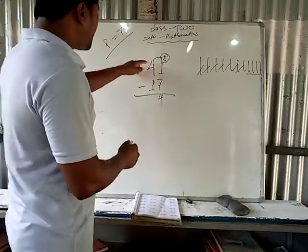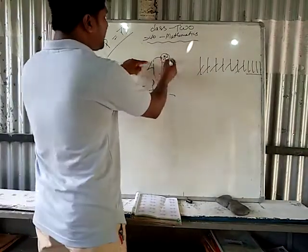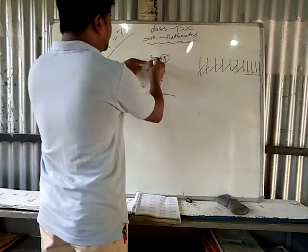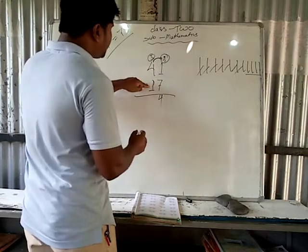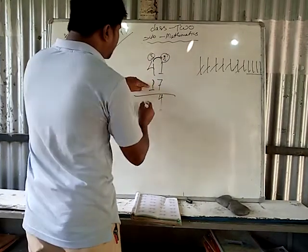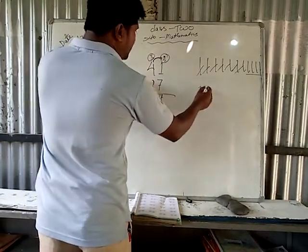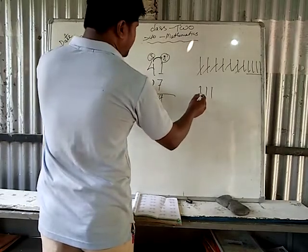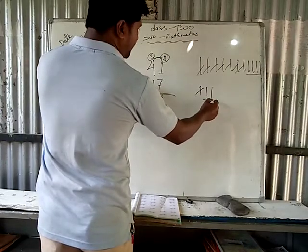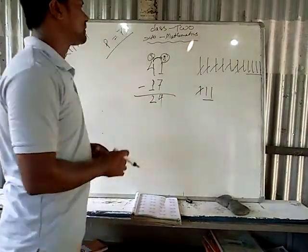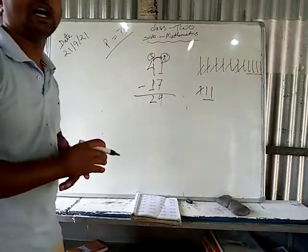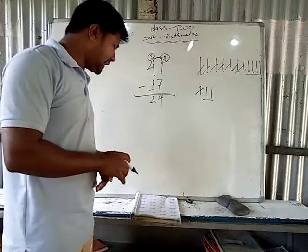Now here in the tens place, how much? You have given away 1, so 1 is gone. Now here 3 is there. From 3 subtract 1 — 1, 2, 3 — if you subtract 1, the remainder is 2. So 2 is here. This is the answer. Clear?